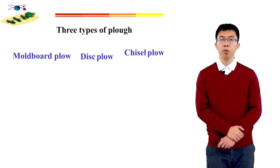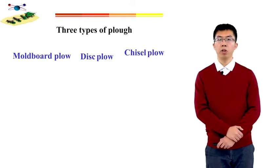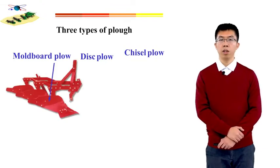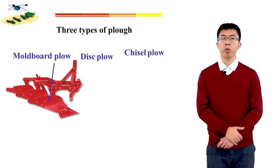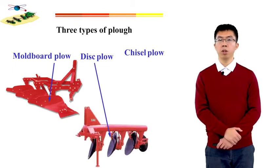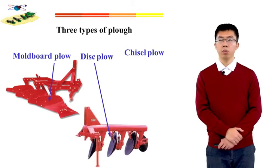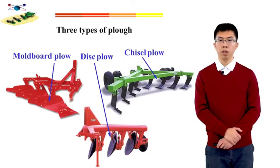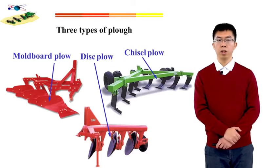The farmland machinery currently used is mainly divided into three categories due to different working principles. The first one is the moldboard plow, the second one is the disk plow, and the third one is the chisel plow.